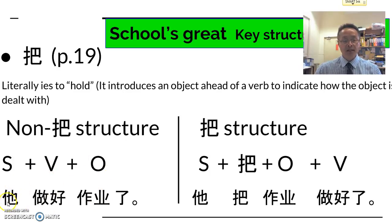For example, 他做好作业了. 他 is the subject, he. 做好, the verb, and we know that 好 here is the verb ending for to do something well or to finish it. And 作业 is homework. 他做好作业了. Now when we change this sentence into using the 把 structure.